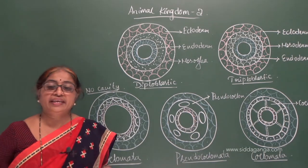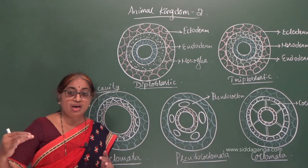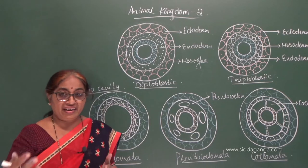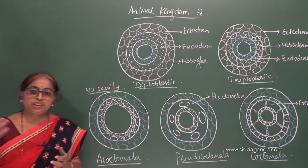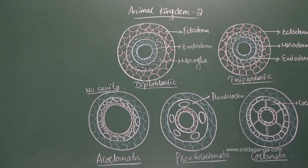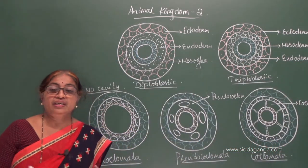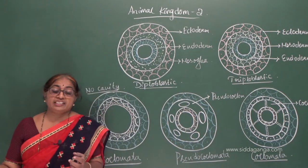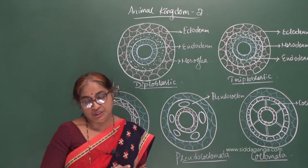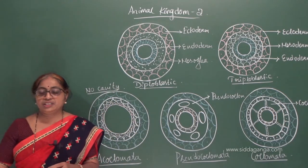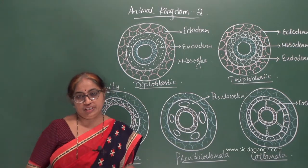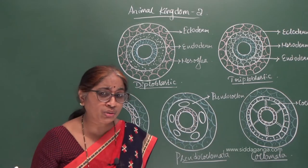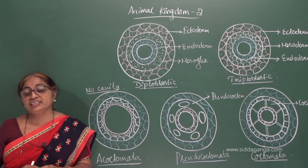We had studied some characteristics in detail, like body organization or cellular organization, where we studied unicellular and multicellular — acellular and multicellular — which also comprises tissue level, organ level, and organ system level of organization. Based on the digestive system, animals have been classified into complete and incomplete digestive systems. In the incomplete digestive system, there is a single opening serving both ingestion and egestion — seen in coelenterates and platyhelminthes — also called the blind sac body plan.